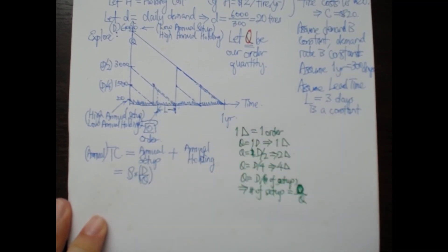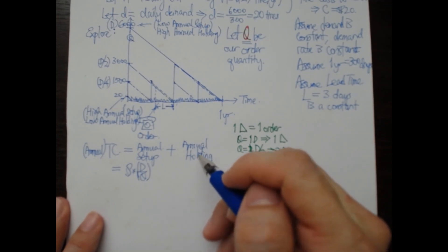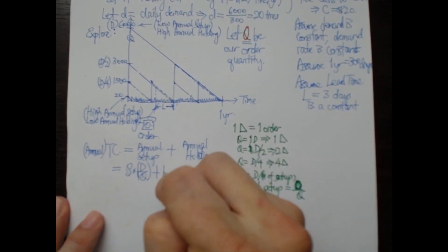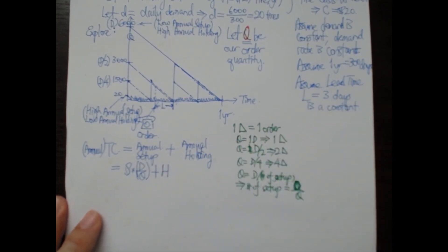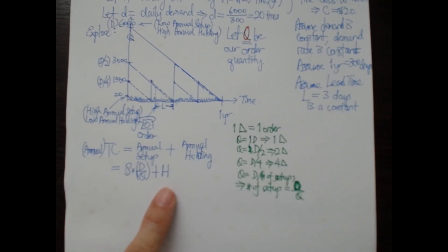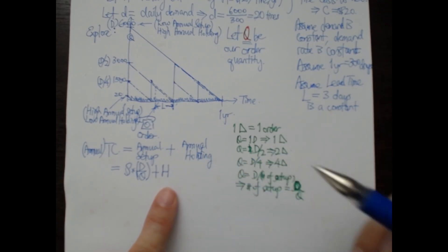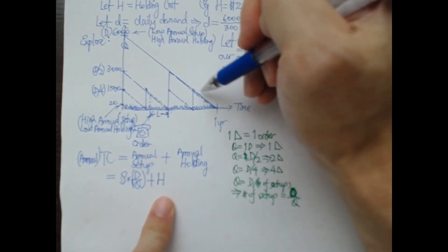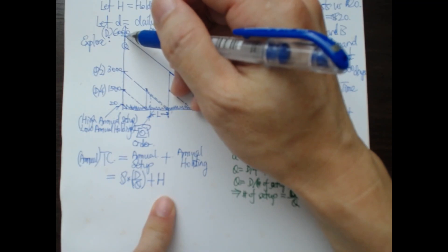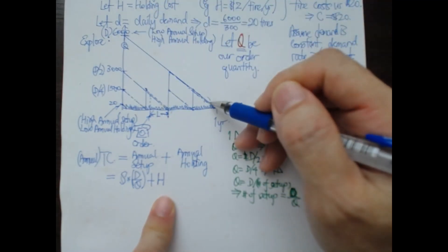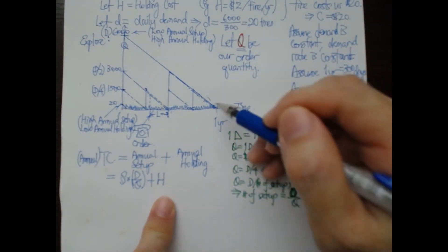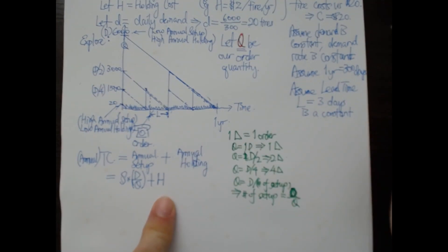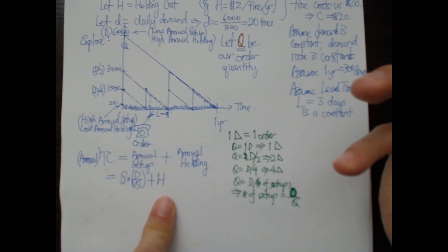Next we need to talk about annual holding cost, which involves h — the holding cost per unit per year. It's a bit less obvious because we need to multiply by the number of units held. Looking at the big triangle: we ought to be spending a lot of holding cost on day one, and relatively zero holding cost on the last day just before the inventory cycle runs out.